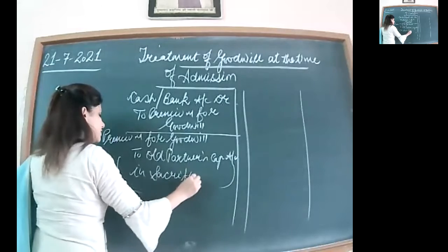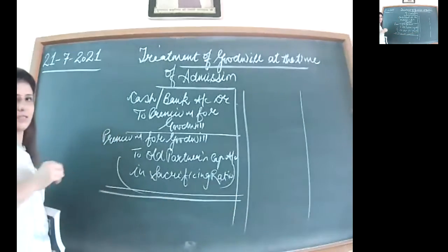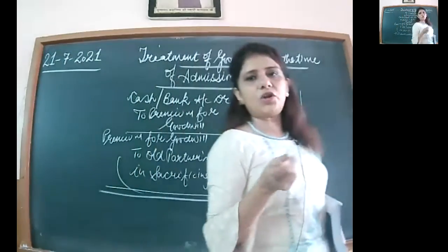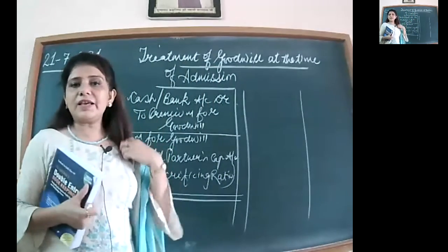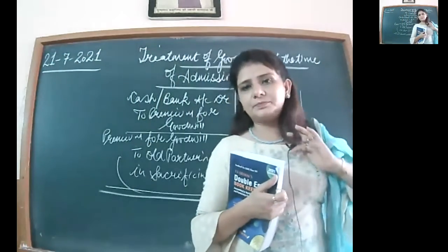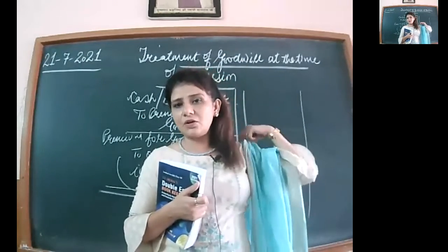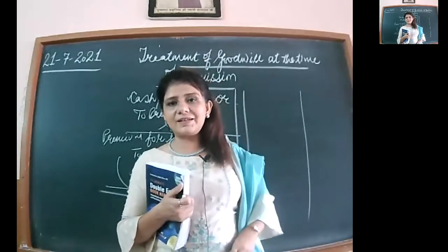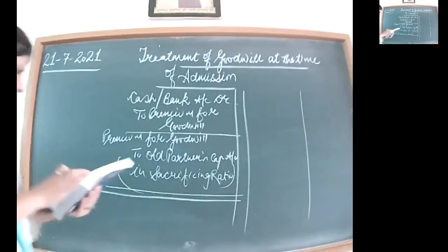That is why we calculate the sacrificing ratio — the goodwill the new partner brings is divided among the old partners. In admission, I will frequently use the terms 'old partners' and 'incoming partner.' One more thing: yesterday we discussed the first case, when the incoming partner pays goodwill to the old partners privately. In that case, we never pass a journal entry. This you must keep in mind, as such questions may appear for one mark.